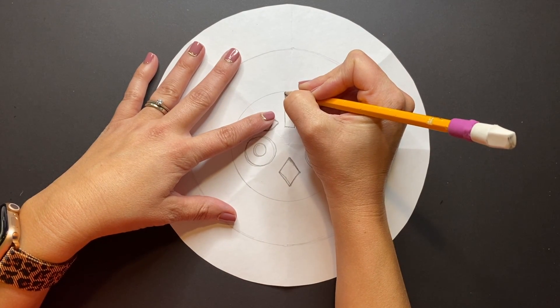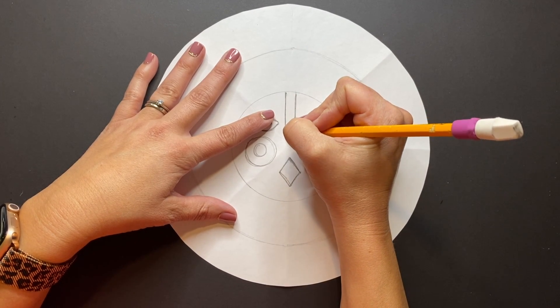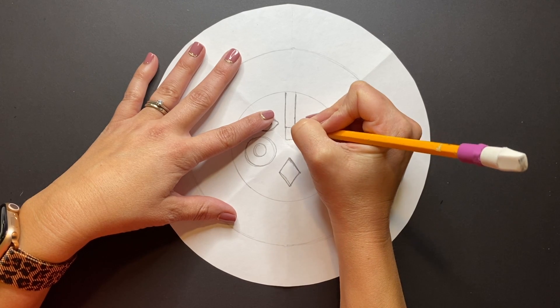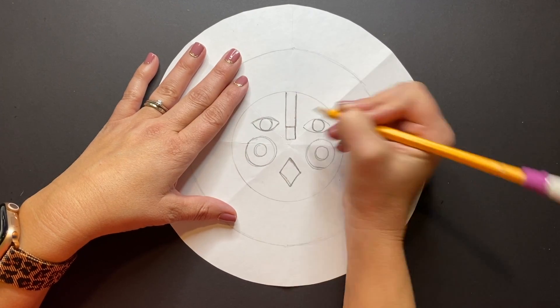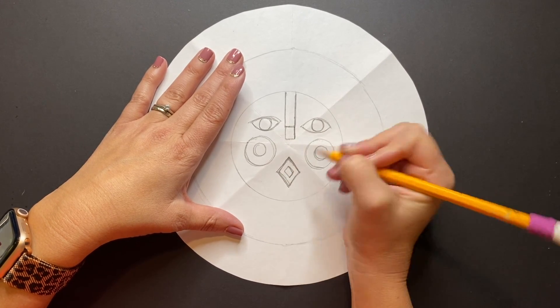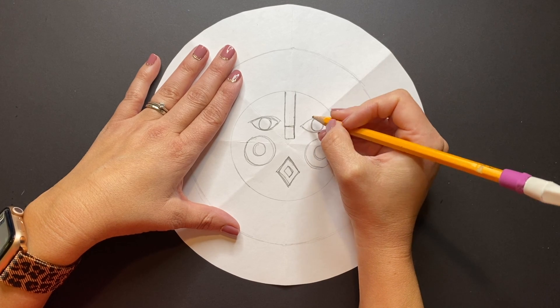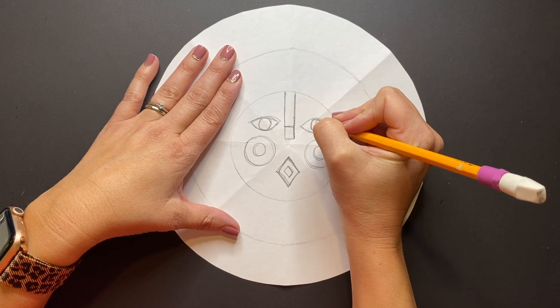Next we're just going to add a few more little details off of our nose. So I'm going to draw a smaller little rectangle coming off that large rectangle that I first drew, and I'm going to draw a smaller little diamond inside of my mouth as well as two little circles inside of my eyes.